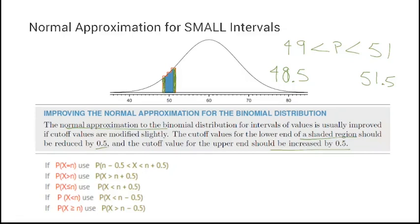If you need to compensate for a very small interval, always add 0.5 to the upper number and subtract 0.5 from the lower number. The normal approximation without correction will be an underestimate for small regions, but with the correction it gets closer. These are approximations and they're good enough for our work.